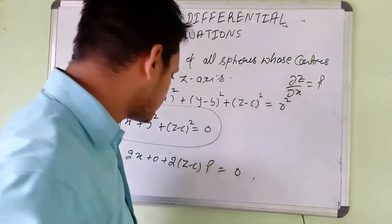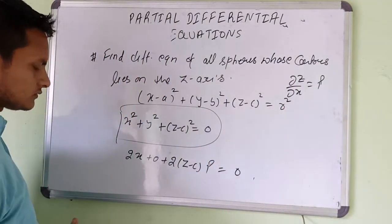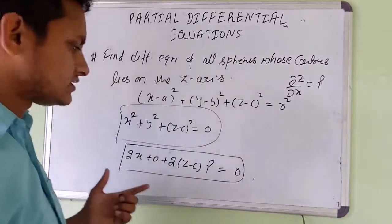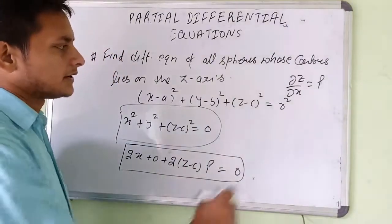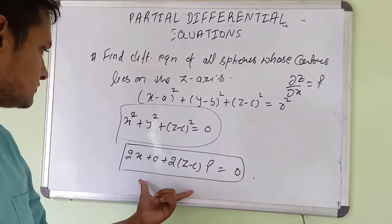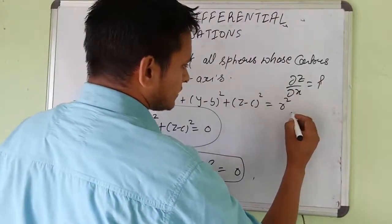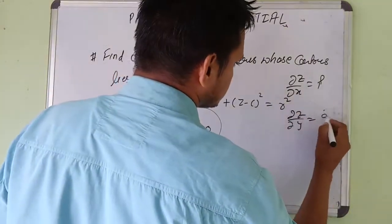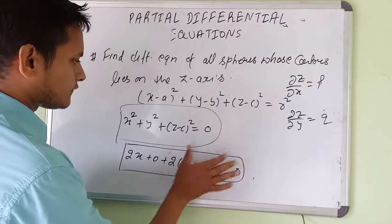The derivative of r² with respect to x is zero. So when we differentiate z with respect to x we get that result. Now again we will differentiate z with respect to y to get q.